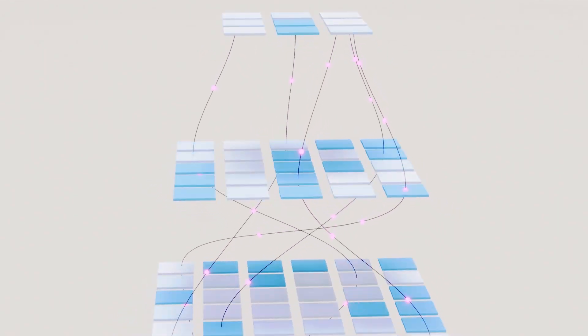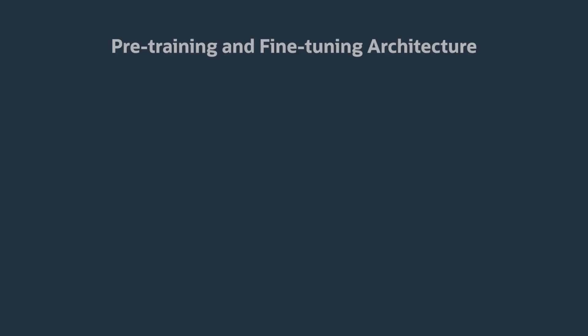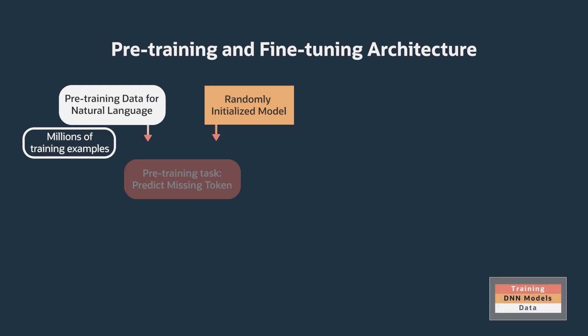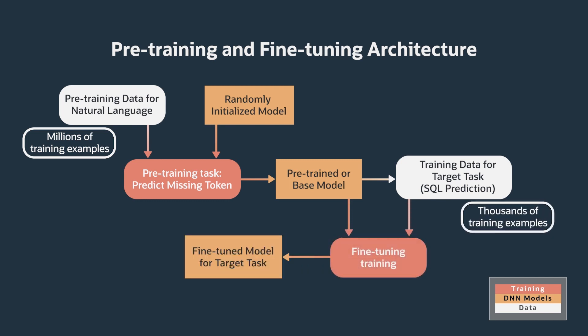Training for a DNN of any form, particularly for natural languages, requires massive amounts of data and massive amounts of compute. If you want to build a DNN designed for a specific task, we don't need millions of training examples for that particular task. Instead, there's a technique called pre-training and fine-tuning that lets us start with a generic model trained on a large amount of data and a generic task, and then fine-tune the model using a small amount of task-specific data.